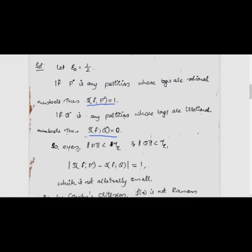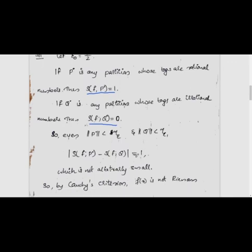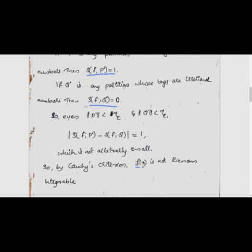Since rational numbers are dense in [0, 1] and irrational numbers are also dense in [0, 1], for any δ > 0 we can find such partitions P̊ and Q̊ with both norms less than δ. But |S(f, P̊) − S(f, Q̊)| = 1, which is not arbitrarily small. By the Cauchy criterion, the function f(x) is not Riemann integrable.